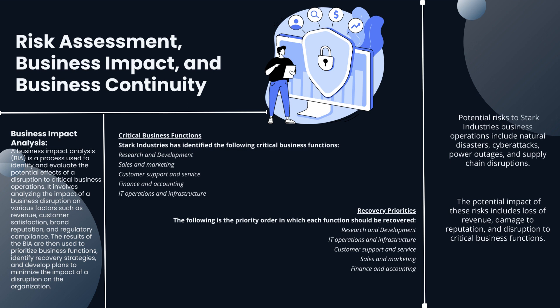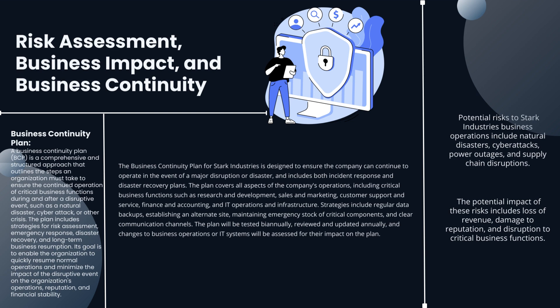Potential risks to Stark Industries' business operations include natural disasters, cyber attacks, power outages, and supply chain disruptions. The potential impact of these risks includes loss of revenue, damage to reputation, and disruption to critical business functions. The Business Continuity Plan (BCP) is a comprehensive and structured approach that outlines the steps an organization must take to ensure the continued operation of critical business functions during and after a disruptive event, such as a natural disaster or cyber attack. The plan includes strategies for risk assessment, emergency response, disaster recovery, and long-term business resumption. The BCP for Stark Industries is designed to ensure the company can continue to operate in the event of a major disruption or disaster, and includes both incident response and disaster recovery plans.